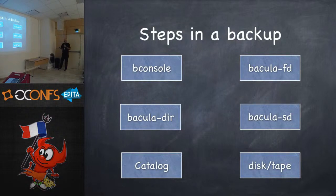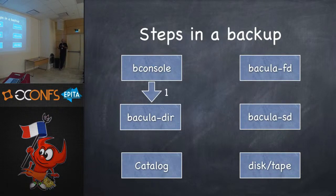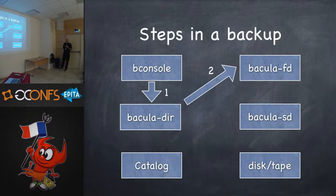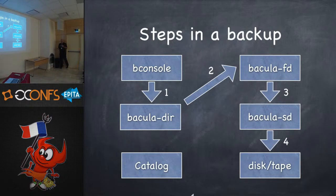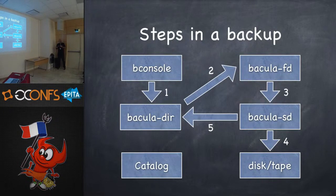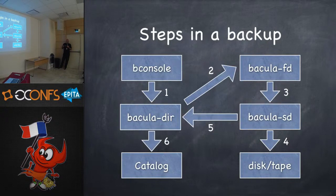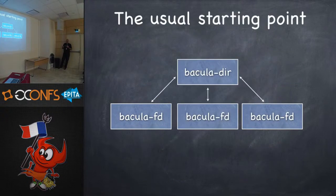Here are the steps in running a quick backup. You get on B console, it contacts the Bacula director, and you say you want to run a job. It contacts Bacula FD, which gets told to back up certain files to the storage daemon. The storage daemon puts those files on either disk or tape, and then sends Bacula DIR a list of things that got backed up. That gets stored in the catalog, because when it's time to restore, you use the catalog to find out where the stuff is.